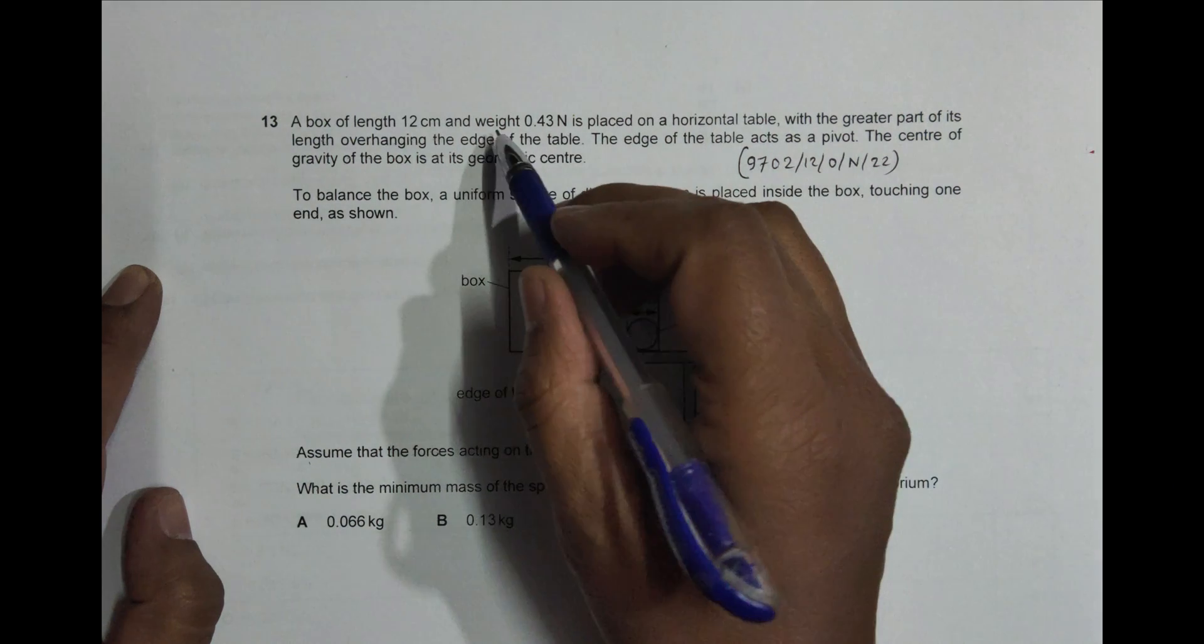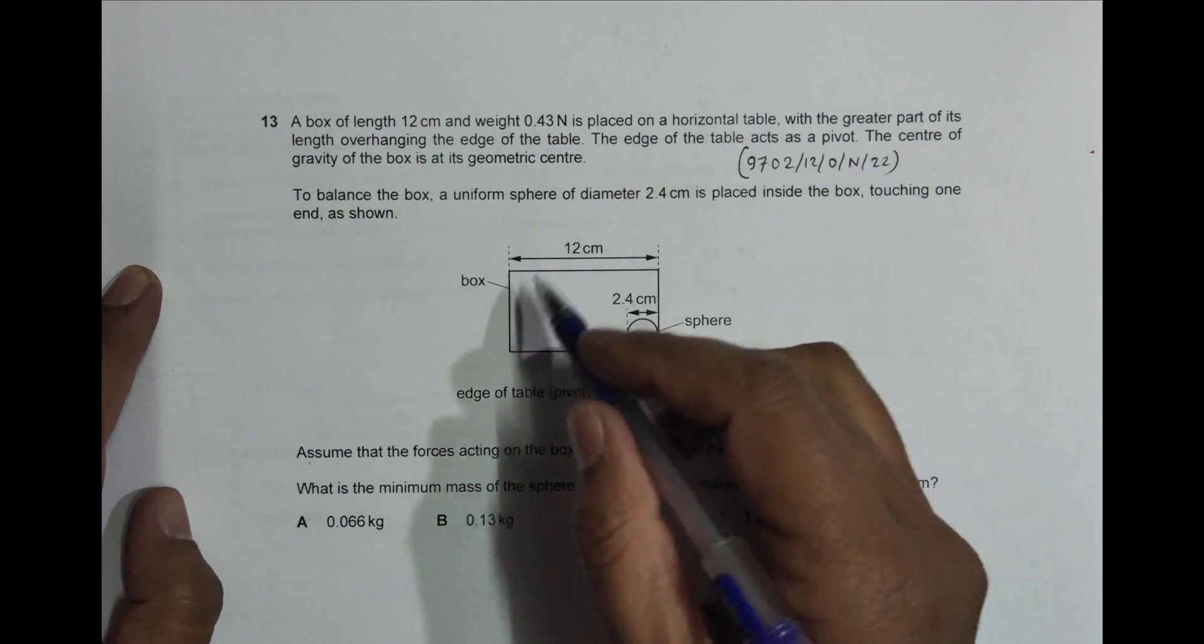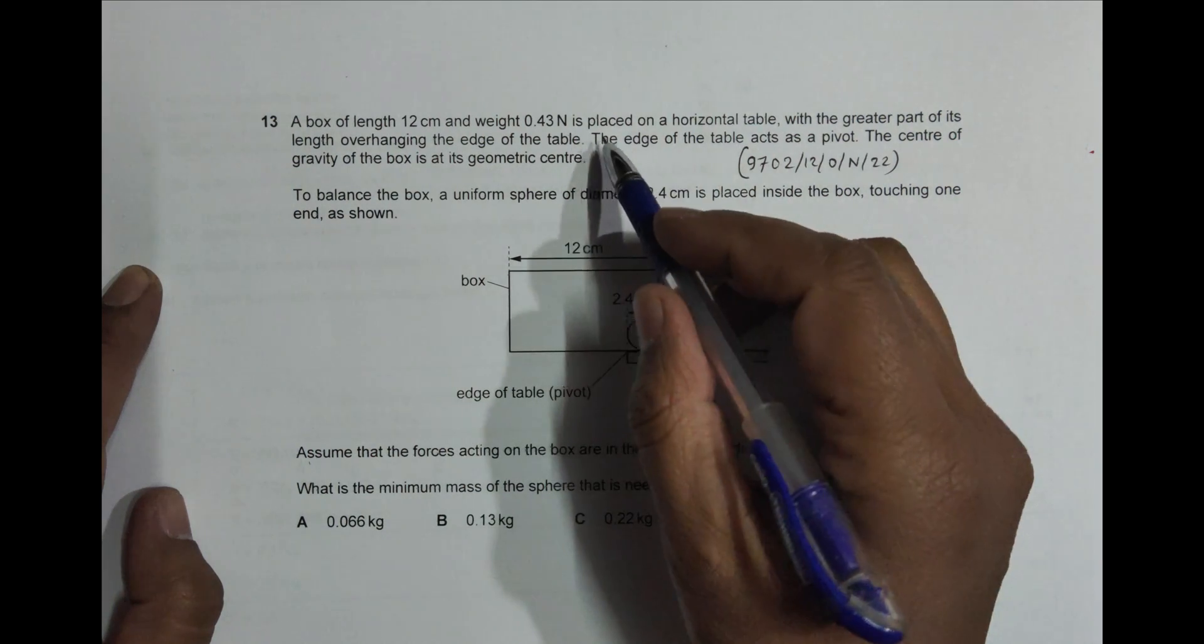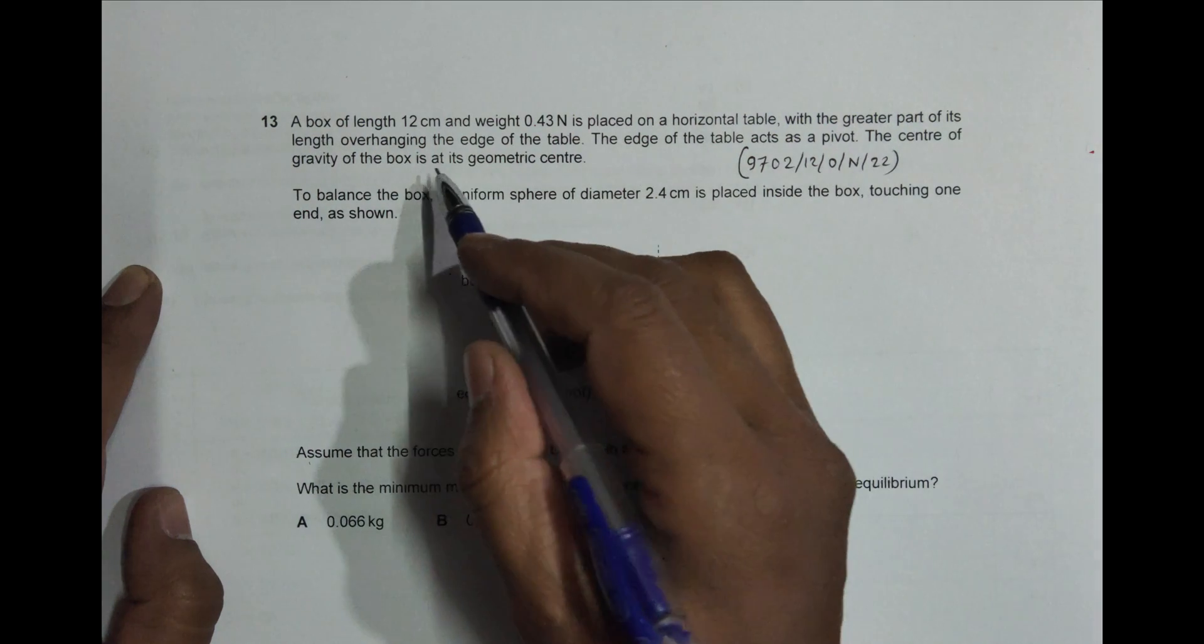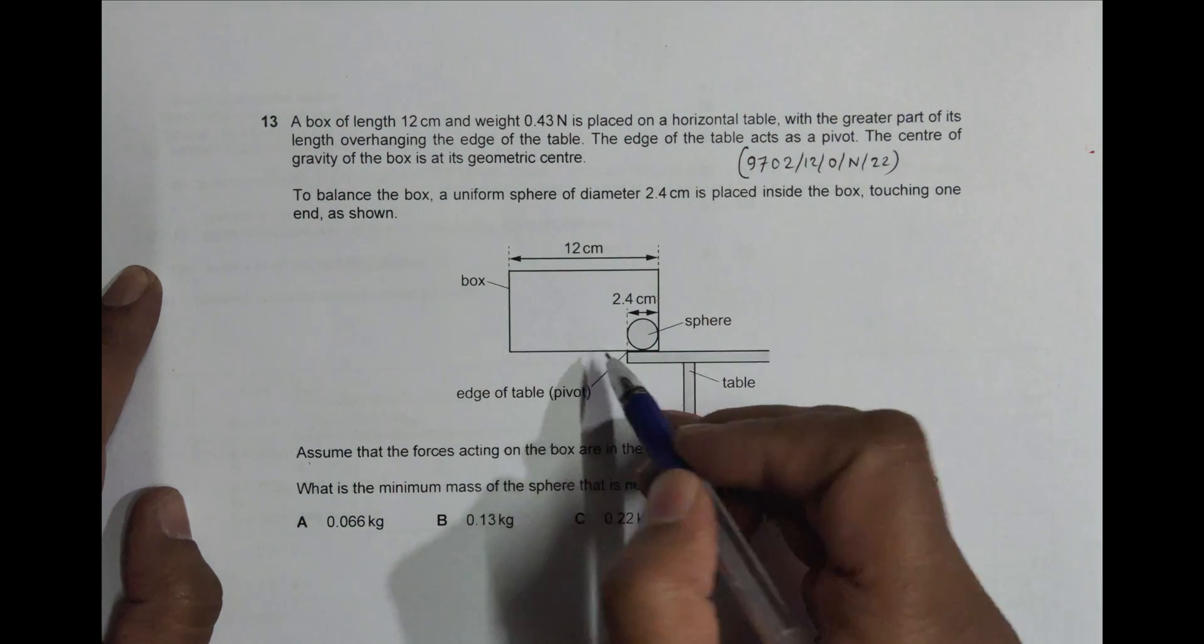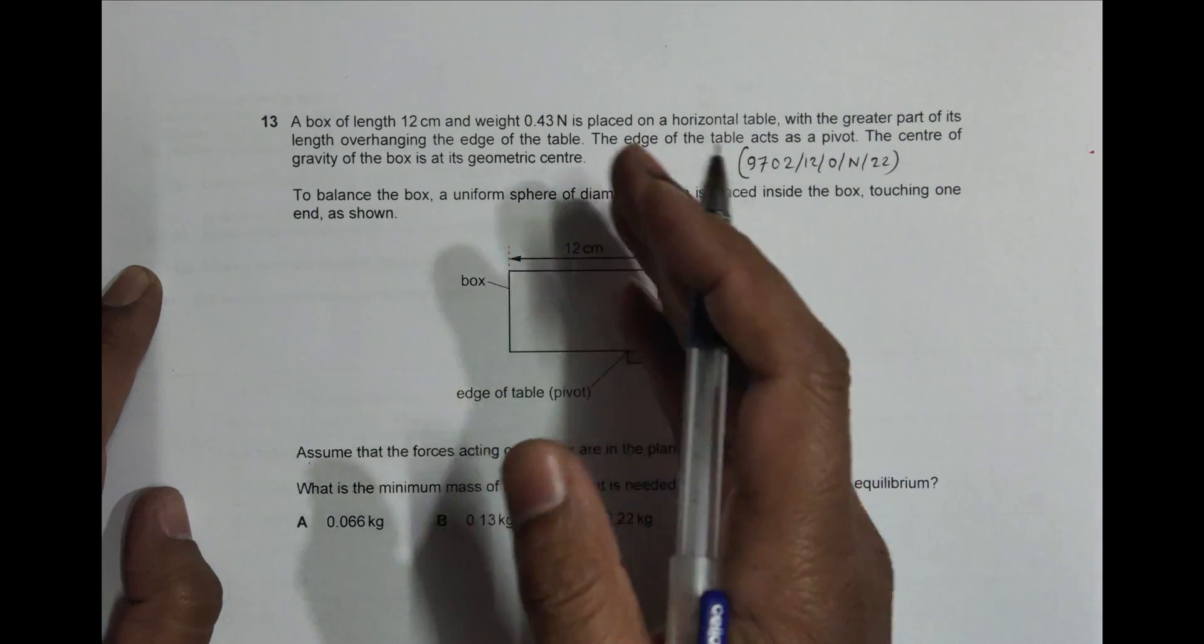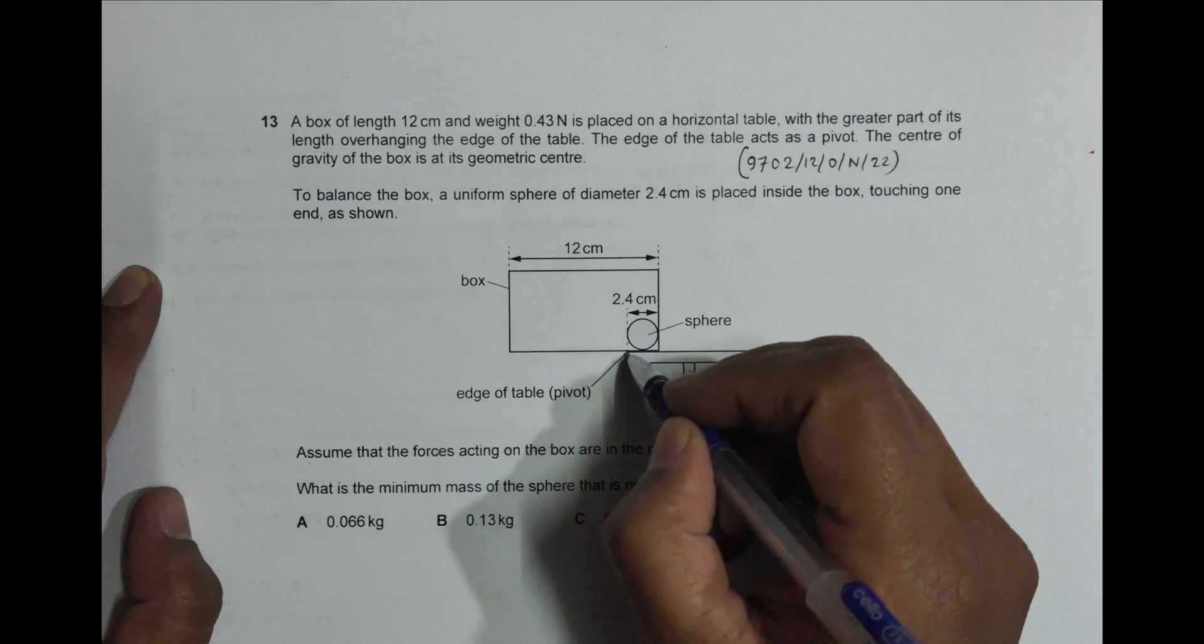...with weight 0.43 Newton is placed on a horizontal table with the greater part of its length overhanging the edge of the table. So the greater part means this much part is overhanging from the edge. The edge of the table acts as a pivot or fulcrum.